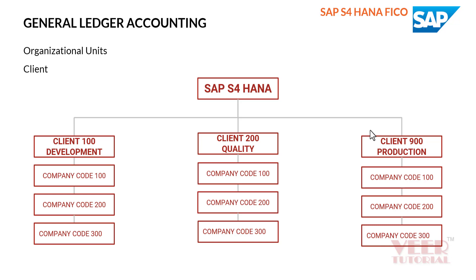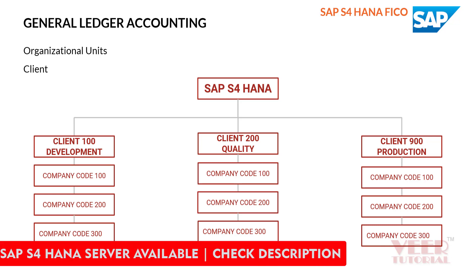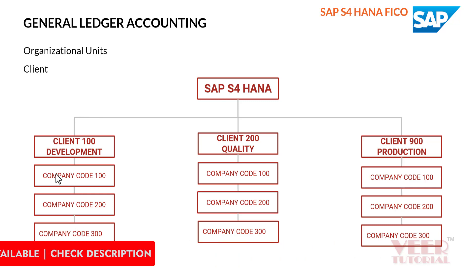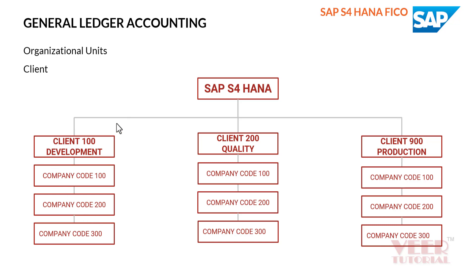For the basic concept, we need to understand that SAP S4 HANA has three or four types of systems. We call them clients, and we also give them names like development, quality, and production. We do all the development in one client, then transport the development and configuration into another client.